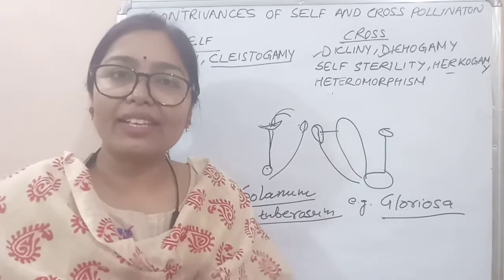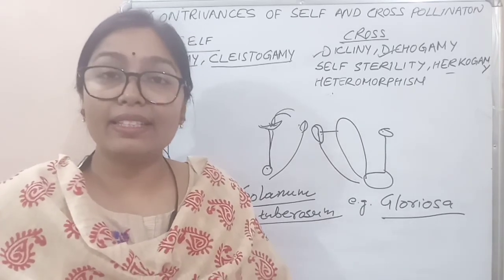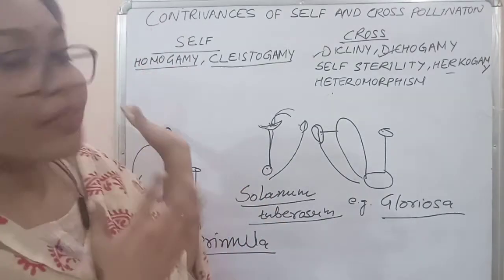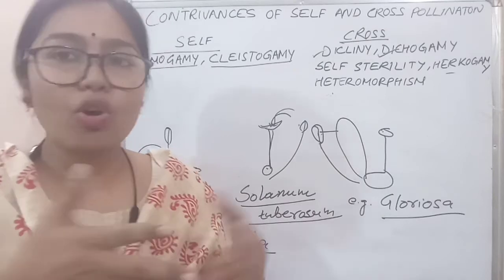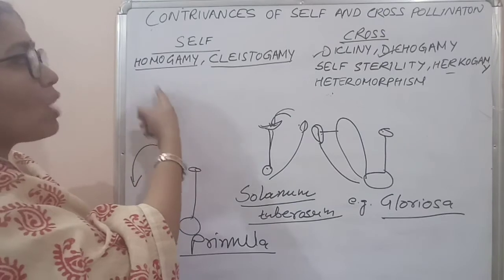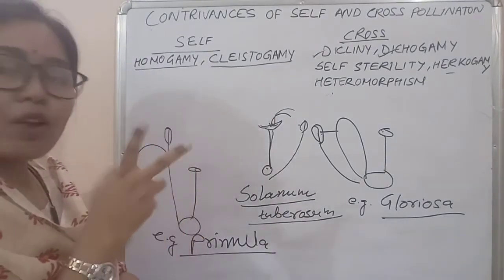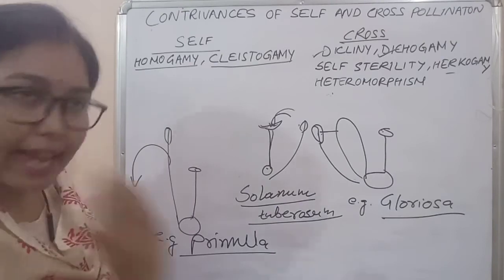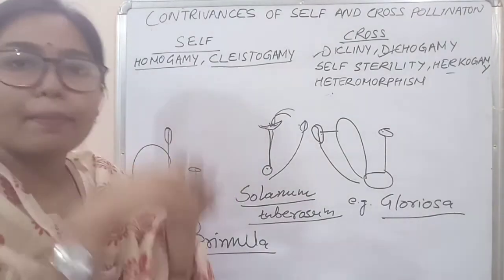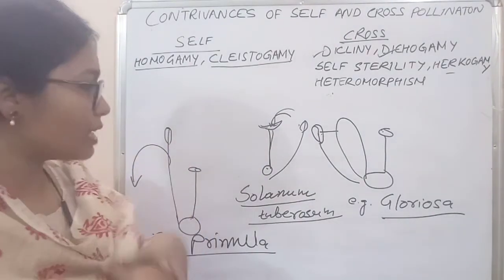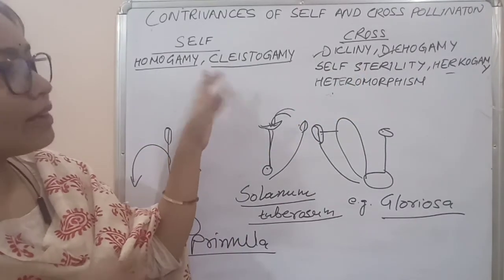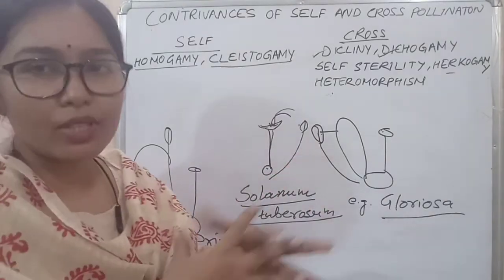The topic is really very interesting. Let's summarize: we've covered the factors favoring self-pollination and cross-pollination. Homogamy means anther and gynoecium mature at the same time; cleistogamy means the flower never opens, with the example of Commelina benghalensis. Dicliny means unisexual flowers; dicogamy means androecium and gynoecium mature at different times.